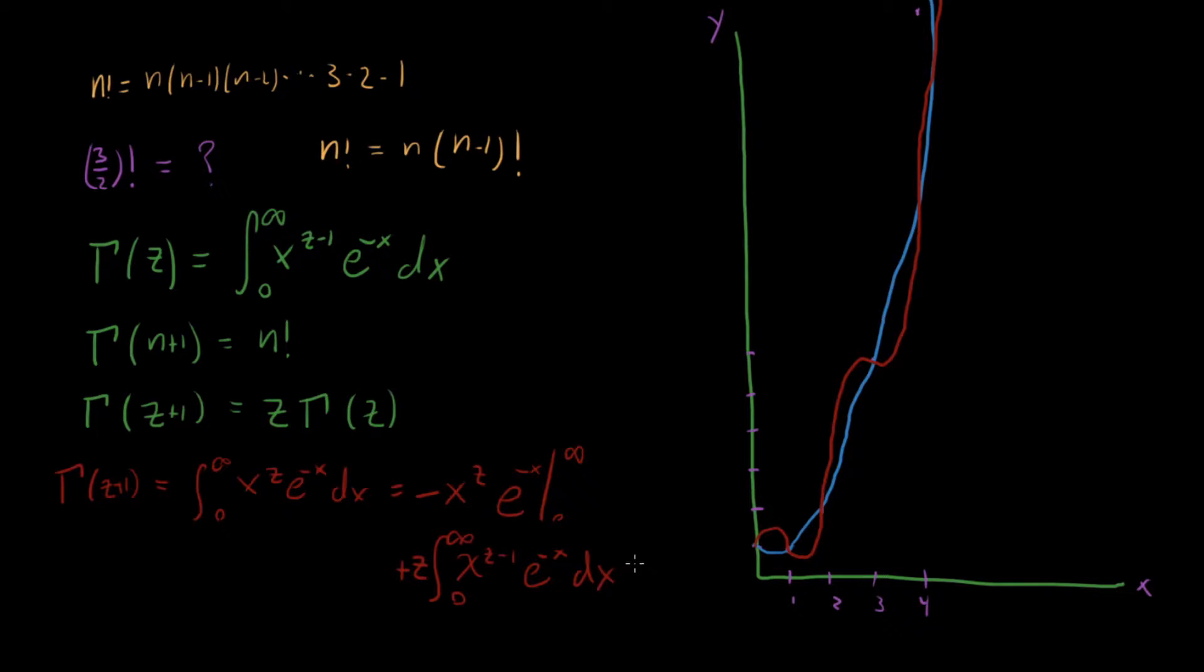And this right here is exactly equal to z gamma of z. So just by doing integration by parts one time, this property immediately popped out. So we know that this gamma function right here does exactly what we want it to do based on our definition for the factorial function.